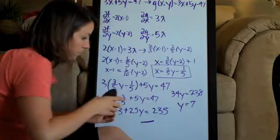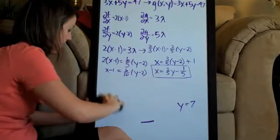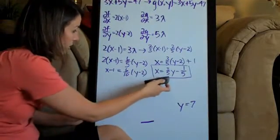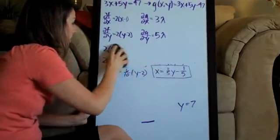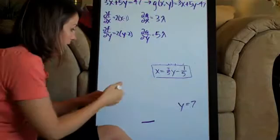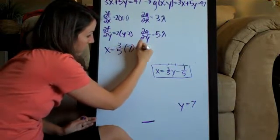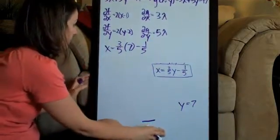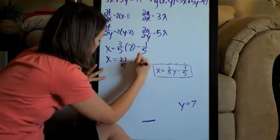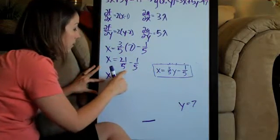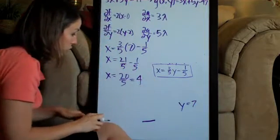Now what we need to do is plug our answer for y into our relationship between x and y. We plug 7 in for y. We'll get x equals 3 fifths times 7 minus 1 fifth. We'll end up with x equals 21 fifths minus 1 fifth. Since we've got common denominators, we can do 21 minus 1 and combine these fractions, which is 20 fifths, and 20 divided by 5 is 4. So x equals 4.